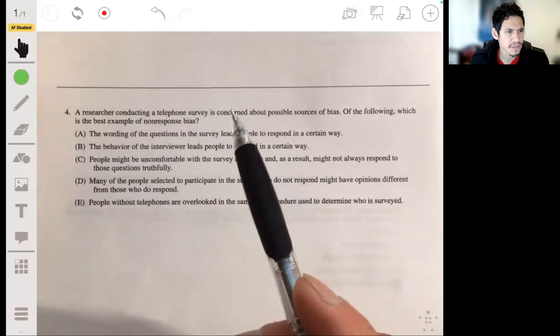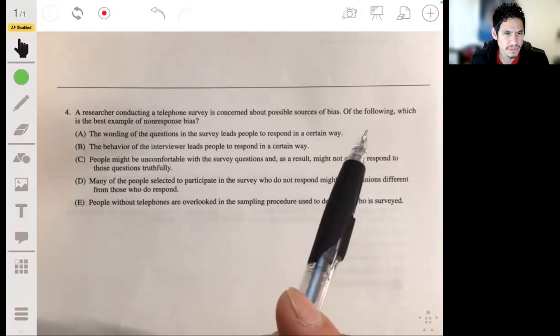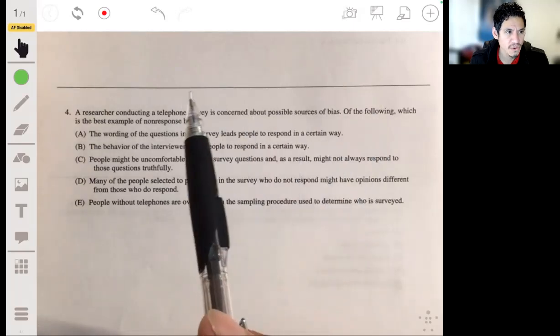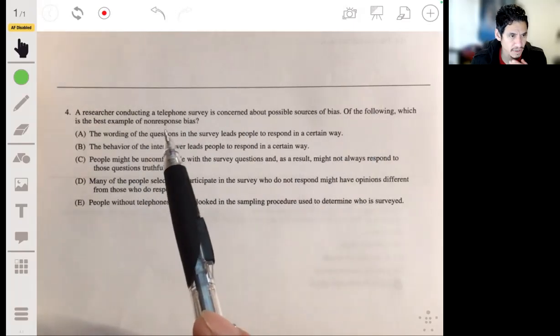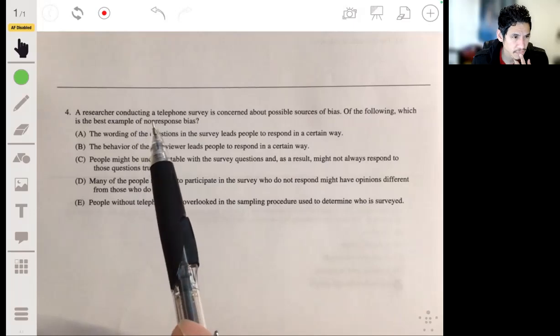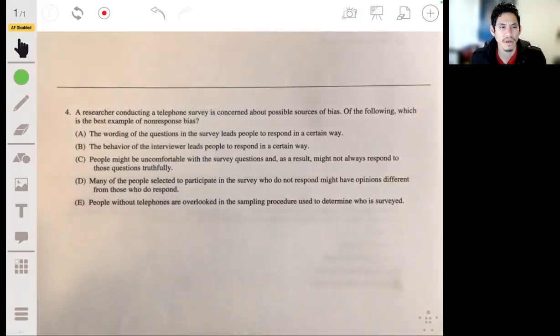A researcher conducting a telephone survey is concerned about the possible sources of bias. Of the following, which is the best example of non-response bias? Okay, so non-response bias is usually kind of confused with being able to not reach someone.